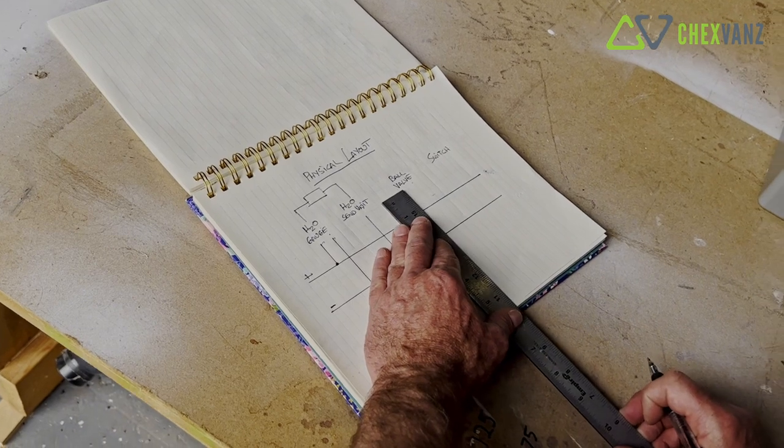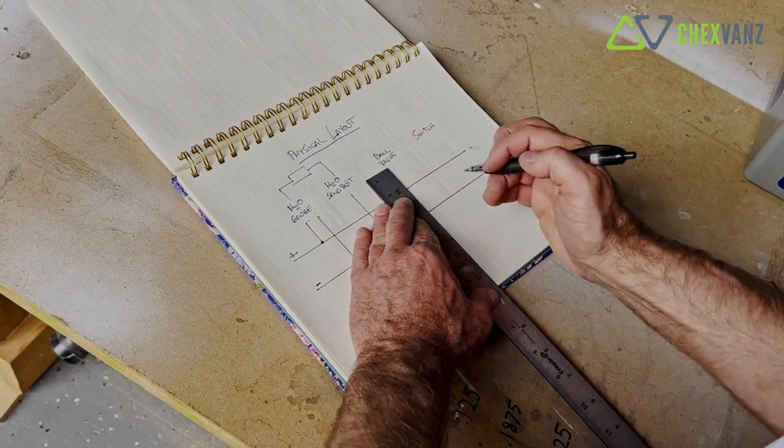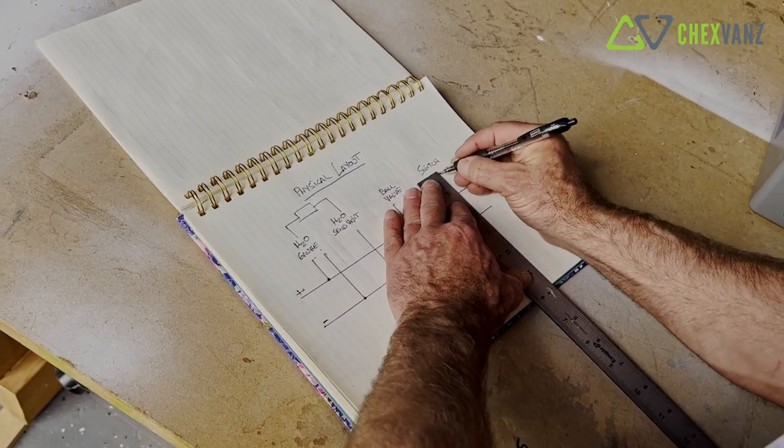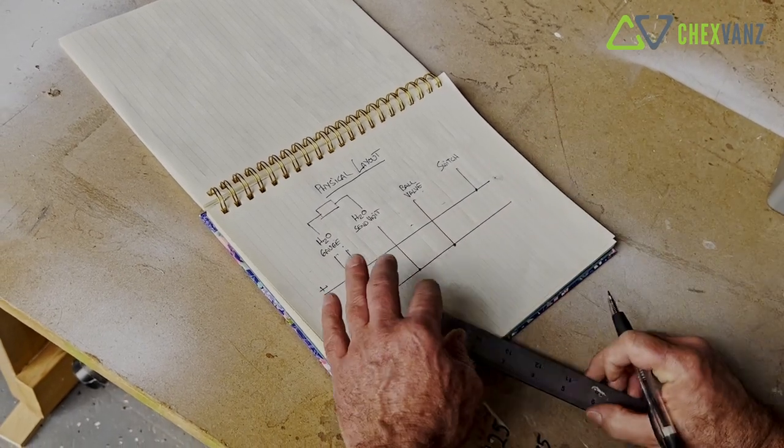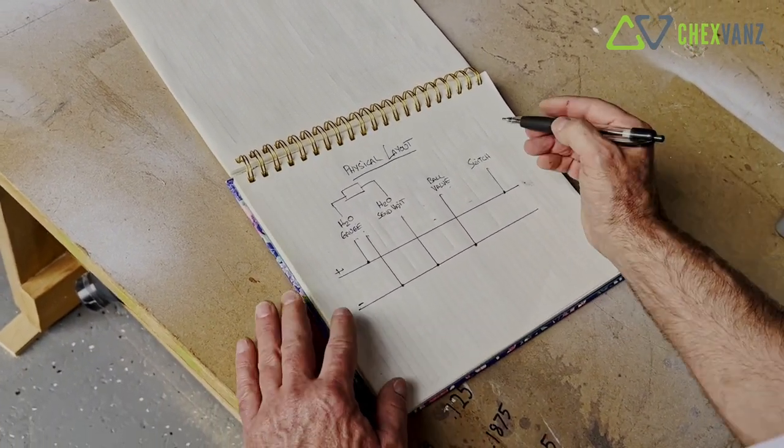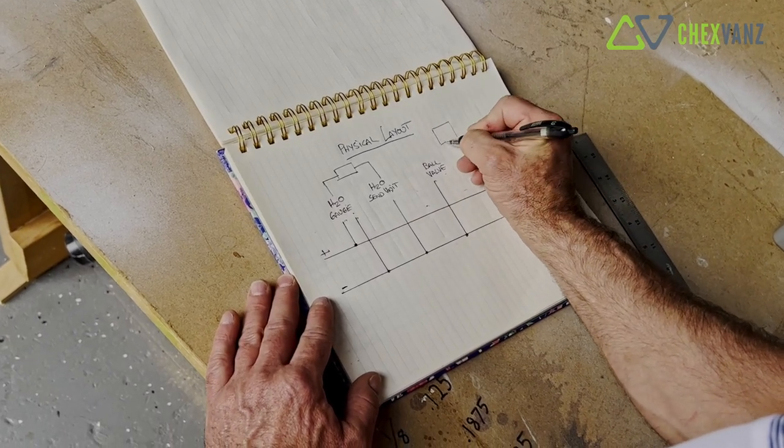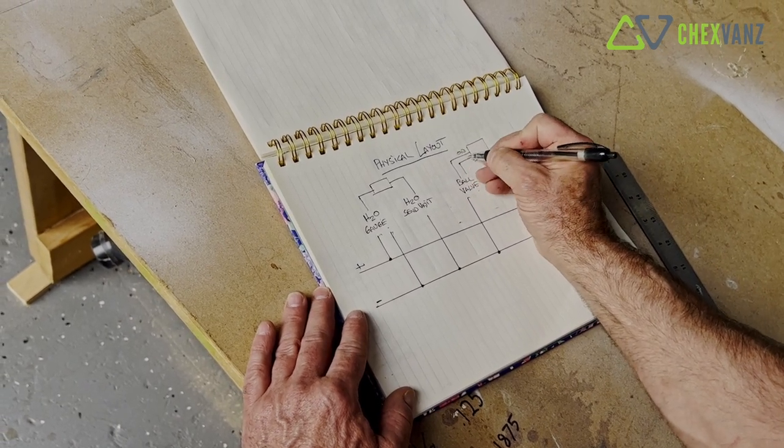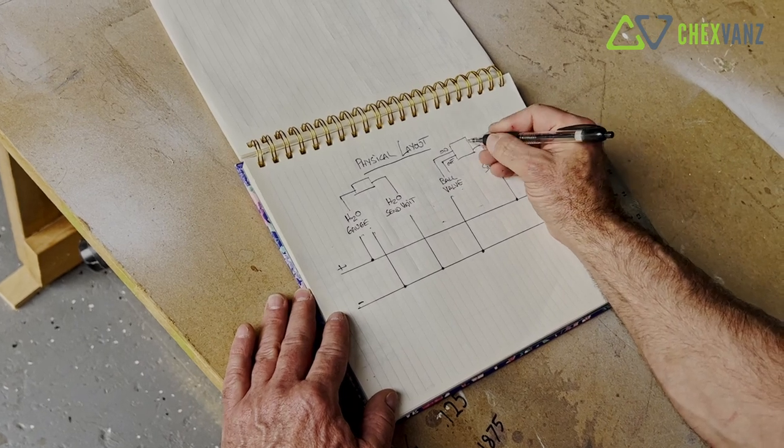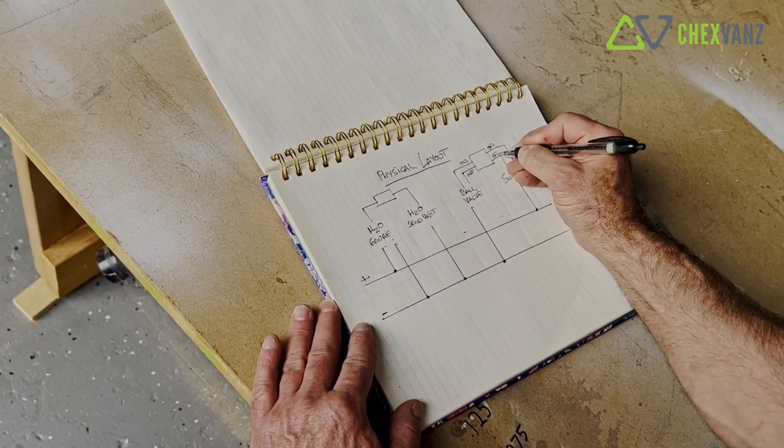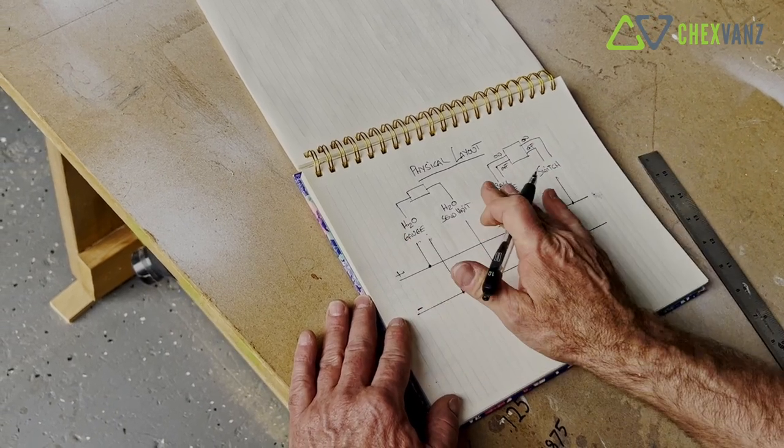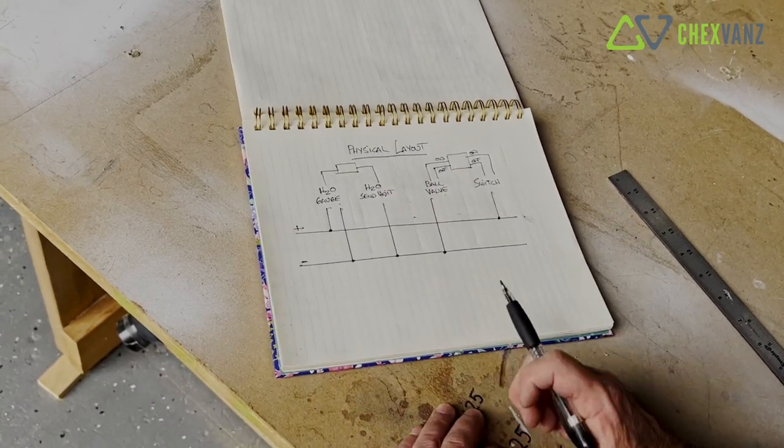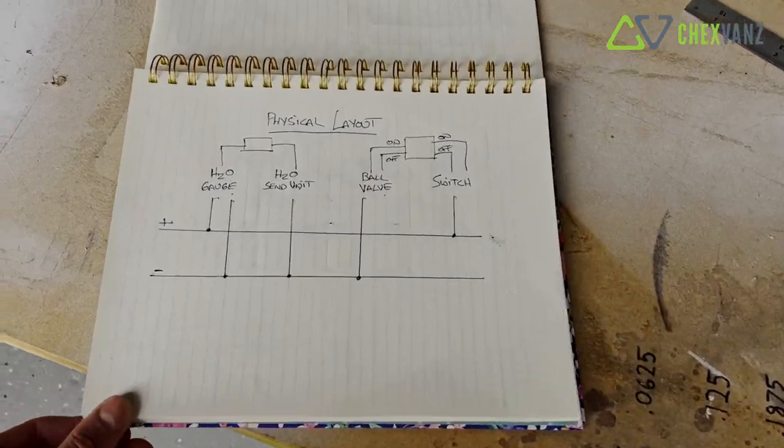On the ball valve we have a physical connection into ground, and on the switch we have a positive connection. And again we now have power to the devices, but we want the on-off operation to happen on the back side here. So the ball valve will have an on and an off, and the switch will have an on and an off. So the switch can now control the ball valve independent of the sending unit or the gauge. Everything is getting power physically and they'll be connected physically in this manner. So let's go show you how that all looks.